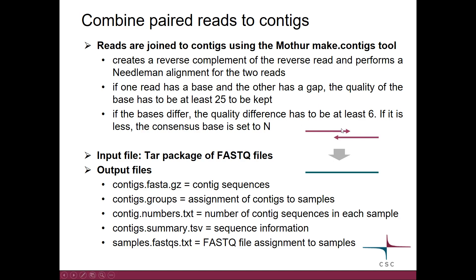If one read has a base in a certain position and the other one has a gap, then the base quality of the base has to be at least 25, so that it's kept.